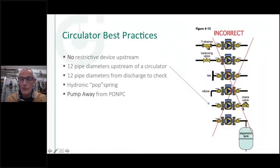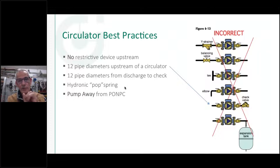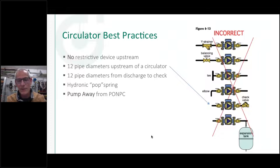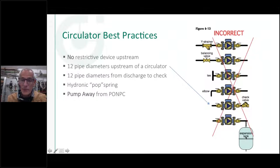A lot of circulators have check valves built right into them now — not ideal placement, but it's the lesser of two evils compared to no check valve at all. If you're adding a check valve on the discharge, get a hydronic-specific one — not a swing check — something spring-loaded with a conical shape for a smooth flow passage, to avoid noise and vibration. Manufacturers like Watts and Caleffi make hydronic-specific check valves that work better than the old weighted flow-check style.